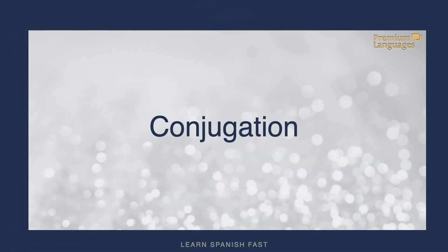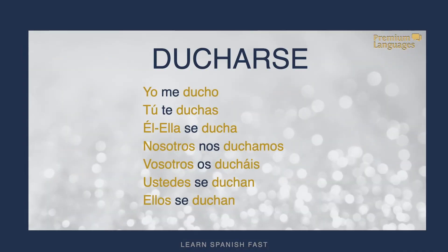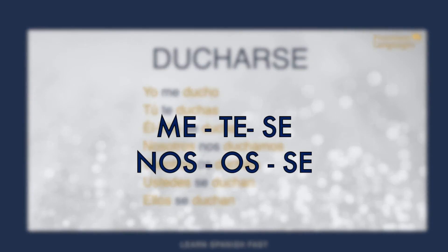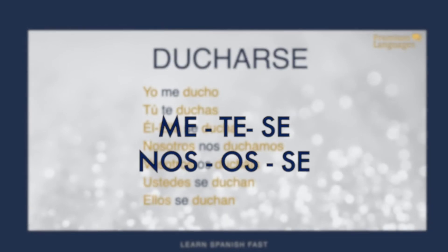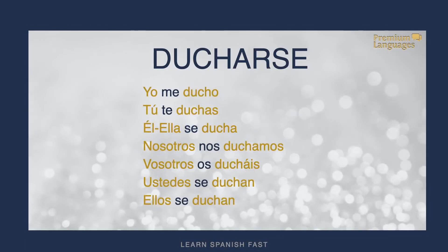We're going to see now how to conjugate them. For that, we will use 'ducharse' as an example: yo me ducho, tú te duchas, él/ella se ducha, nosotros nos duchamos, vosotros os ducháis, ustedes se duchan, and ellos se duchan. The interesting thing here is that we are adding a pronoun — me, te, se, nos, os, and se — before the verb is conjugated.